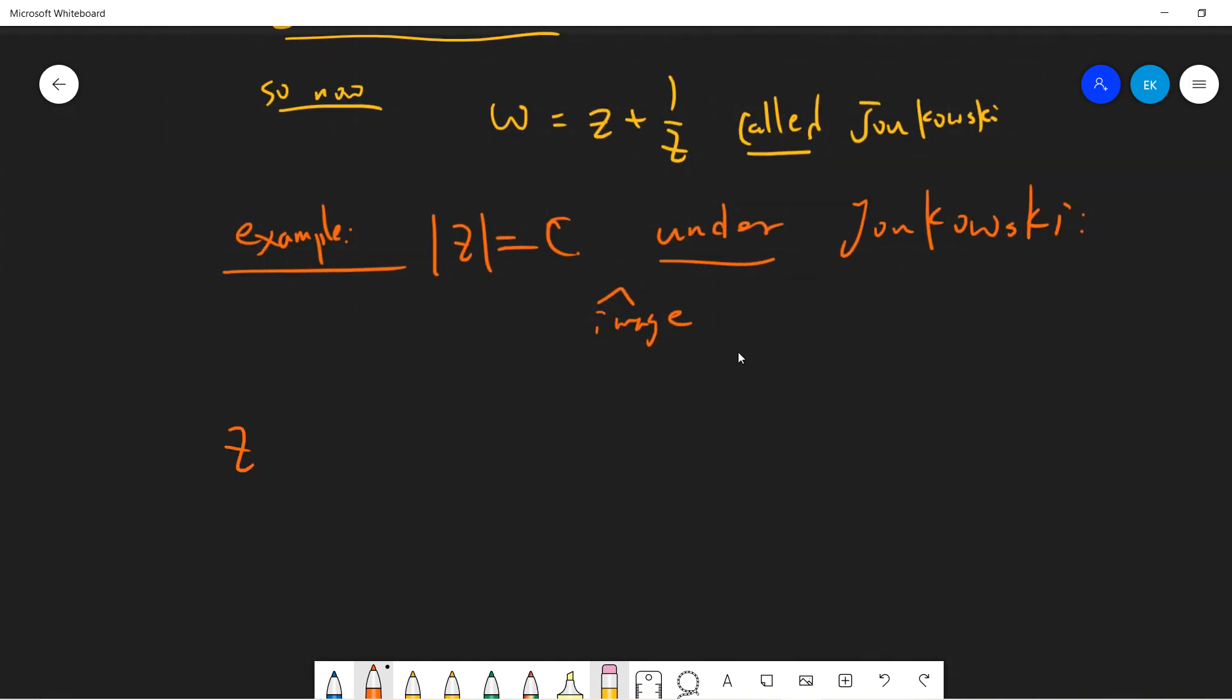OK, so let's write z equals to c times exponential i theta. OK, so omega will be exponential i theta c plus 1 over c exponential minus i theta. Right.